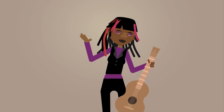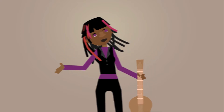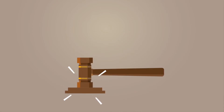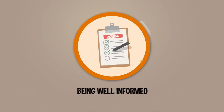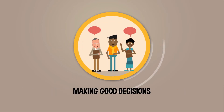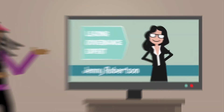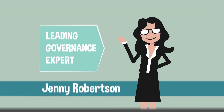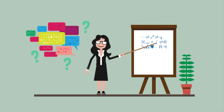Hi, I'm Shelley Morris. Welcome to Elected Member Training. Good governance is a four-way play: knowing your responsibilities, being well-informed, representing the community, and making good decisions. Let's watch one of Australia's leading governance experts, Jenny Robertson, explain council business in a way we can all understand.